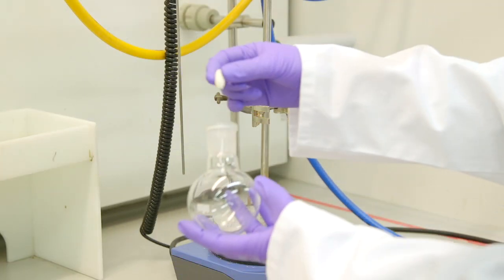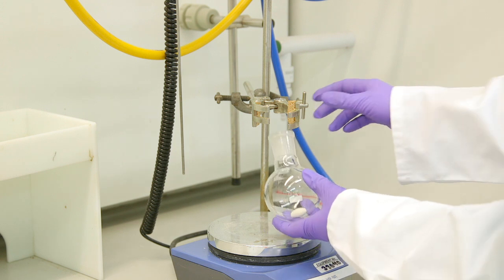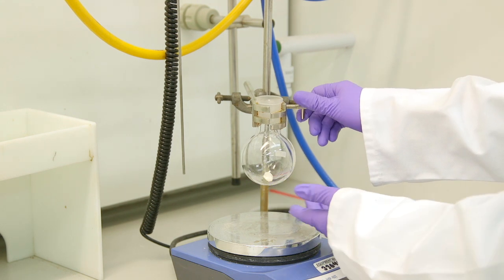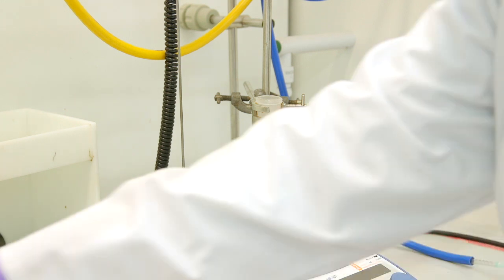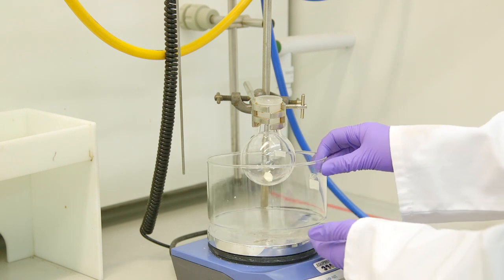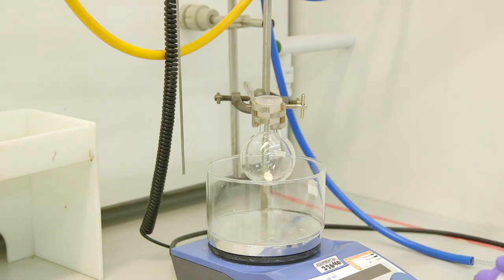First we are going to take our round bottom flask with a magnetic stirrer bar and clamp it in place. Underneath the flask we will place our secondary container. Should there be a leak from the flask, the secondary container will capture the lost material.